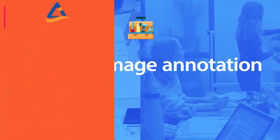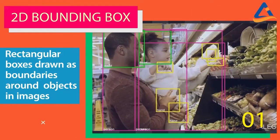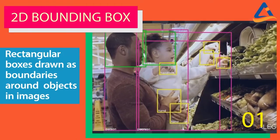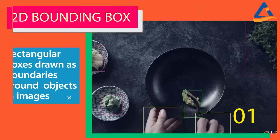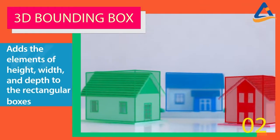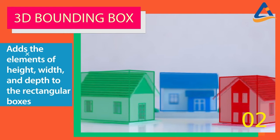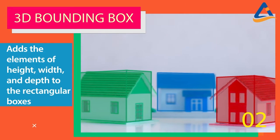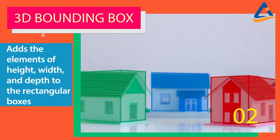2D bounding boxes are rectangular boxes drawn as boundaries around objects and images. While 3D bounding boxes add the elements of height, width, and depth to the rectangular boxes, improving accuracy.